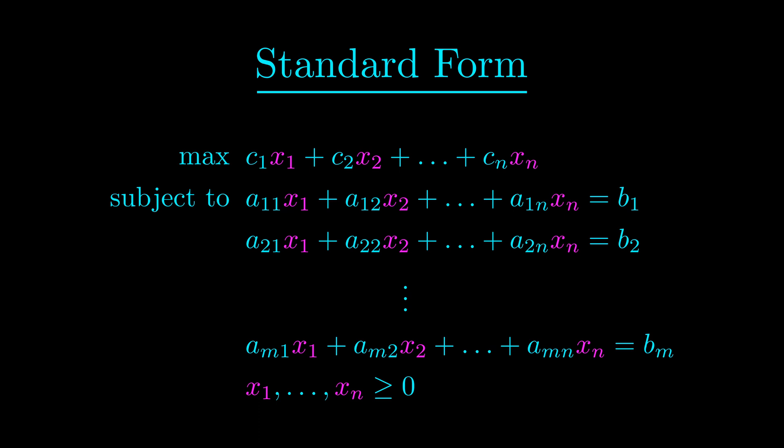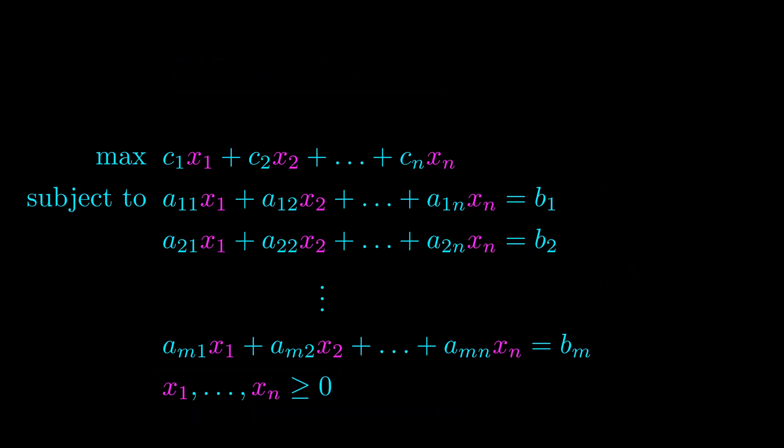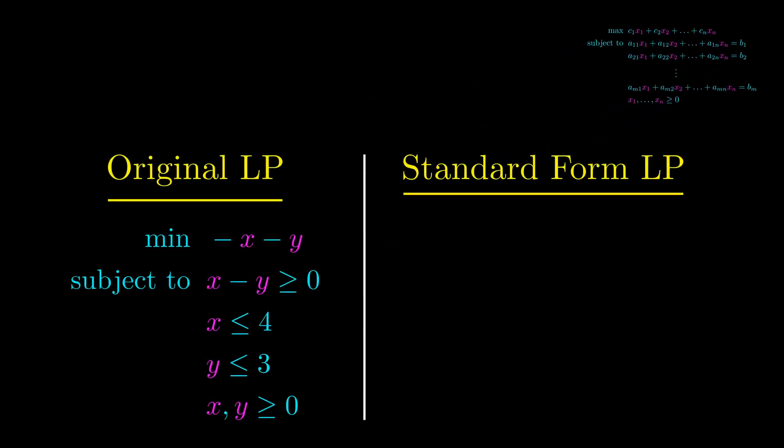Standard form is where the only inequalities that we have is that the variables are non-negative. All other constraints are equality constraints. And all linear programs can be transformed into standard form. Let's try transforming the following linear program.